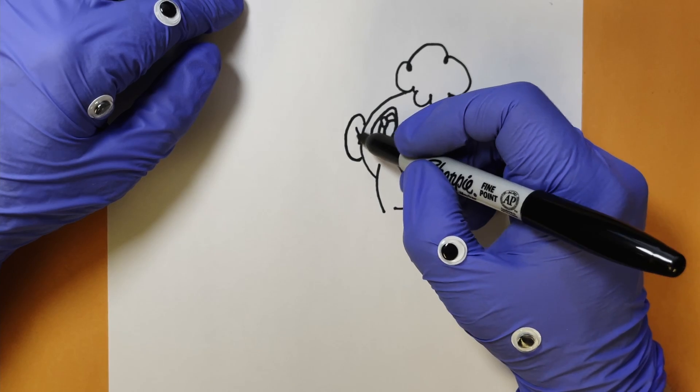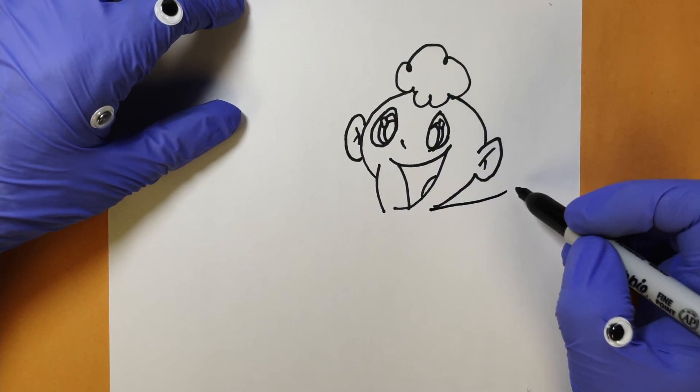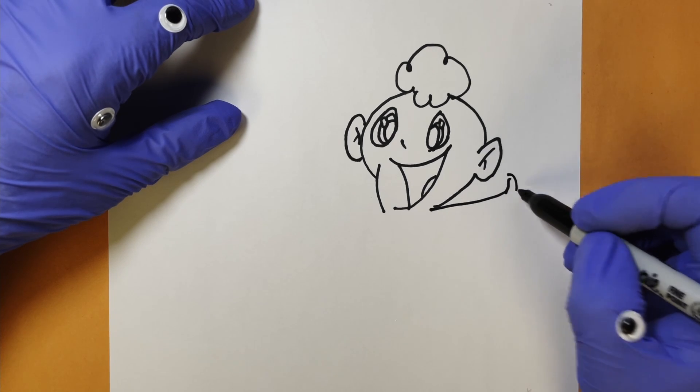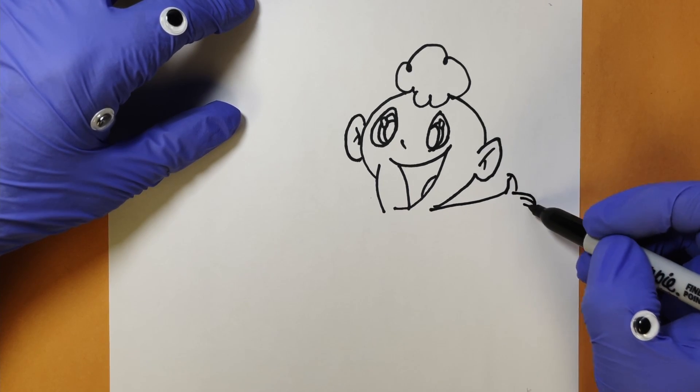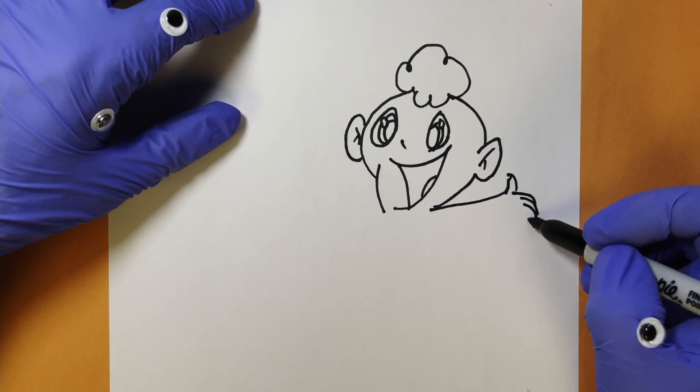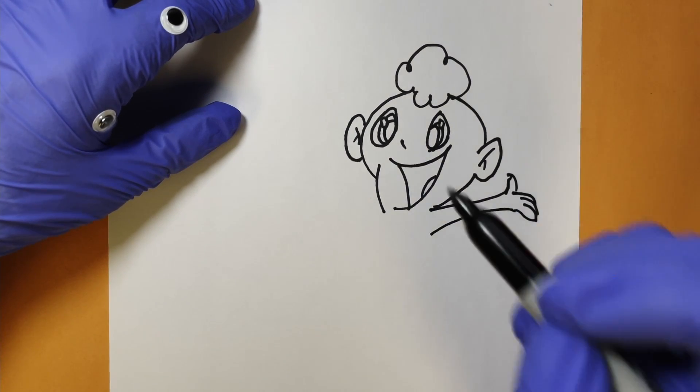Now we can draw an arm here like that, a little thumb. One, two, three - let's give him three fingers, he's a cartoon after all. Bring his arm down like that.